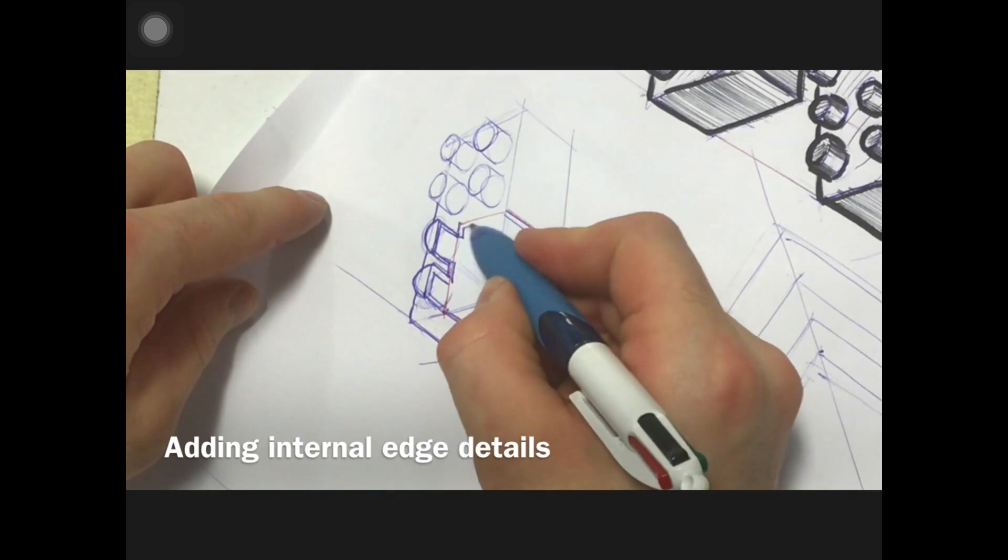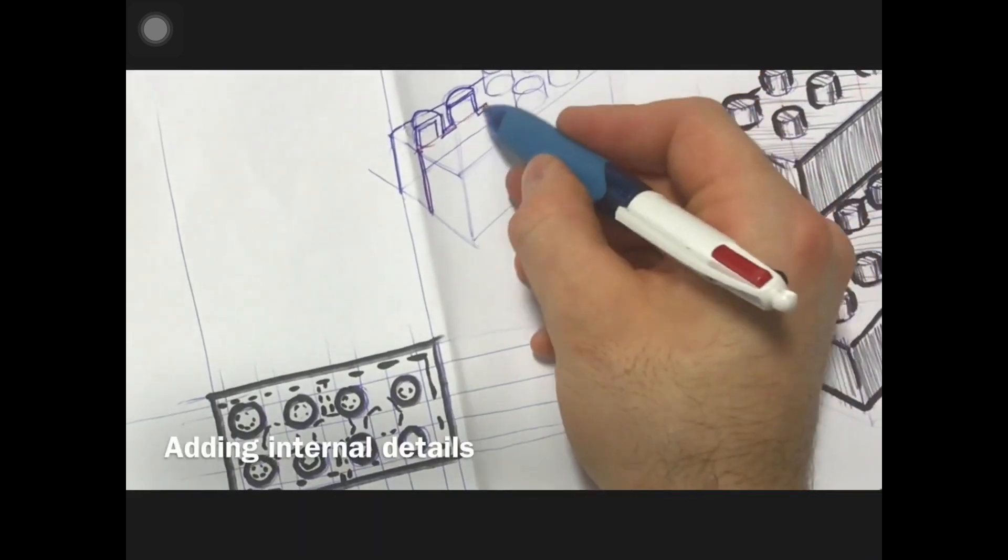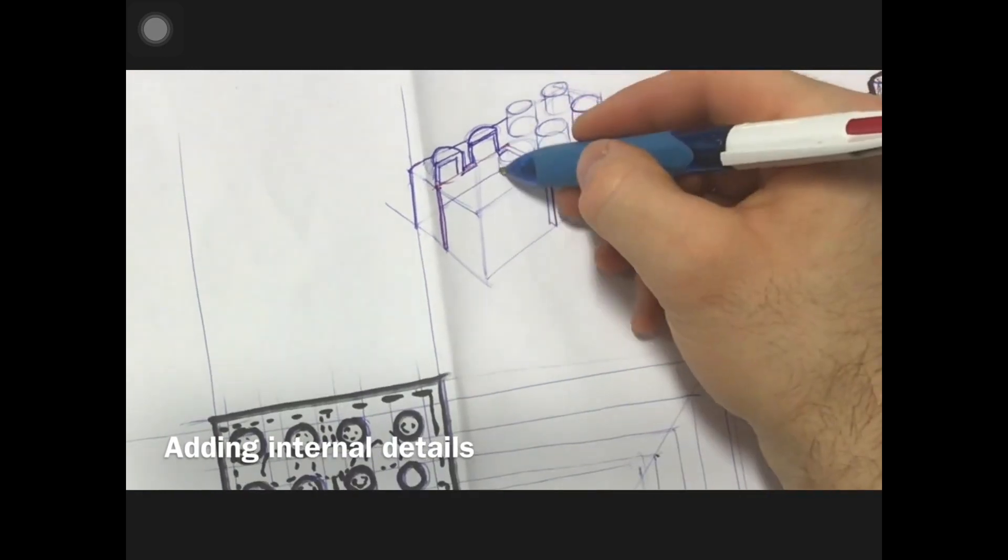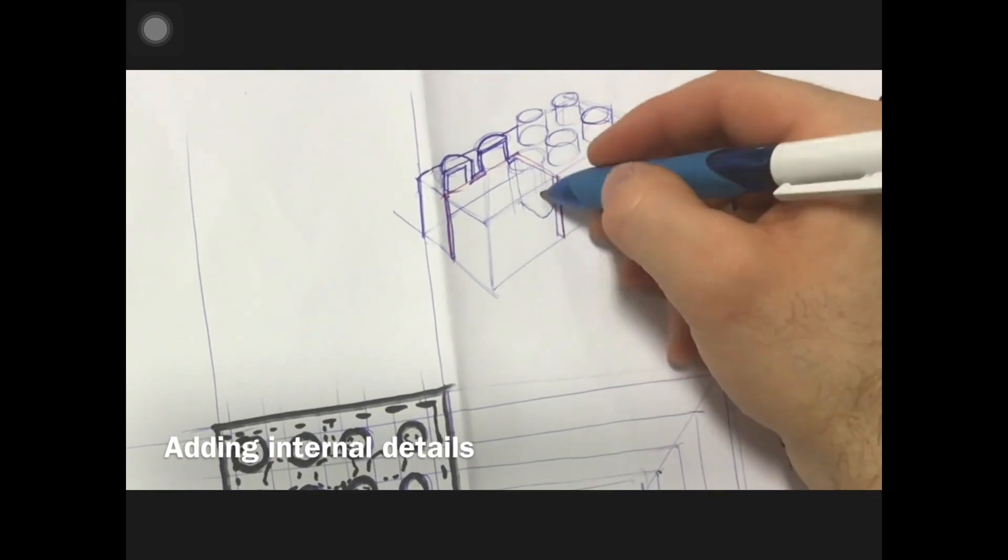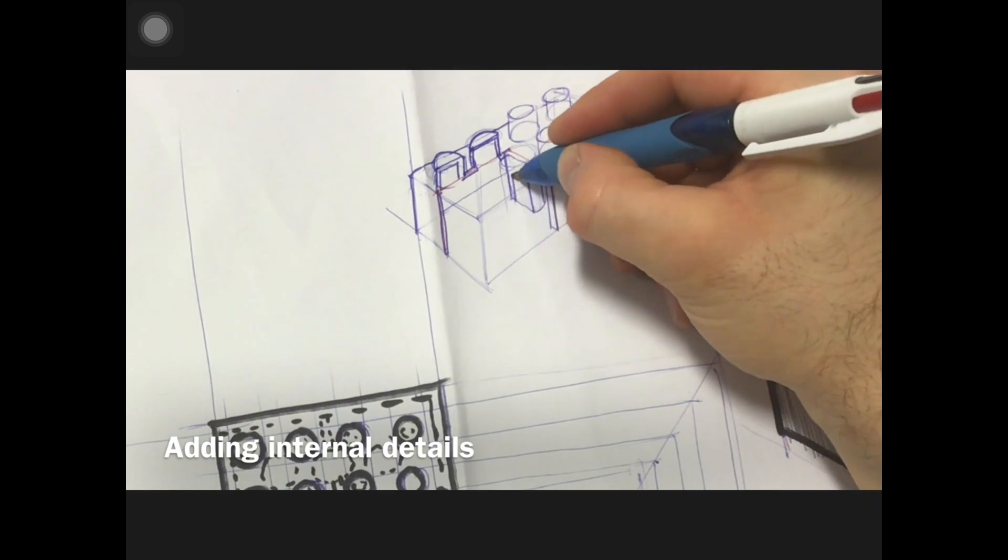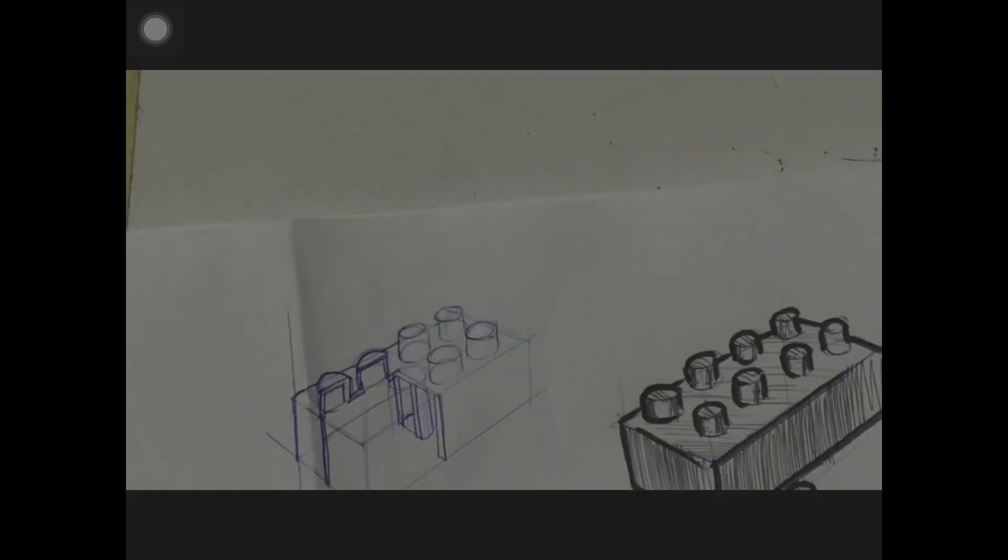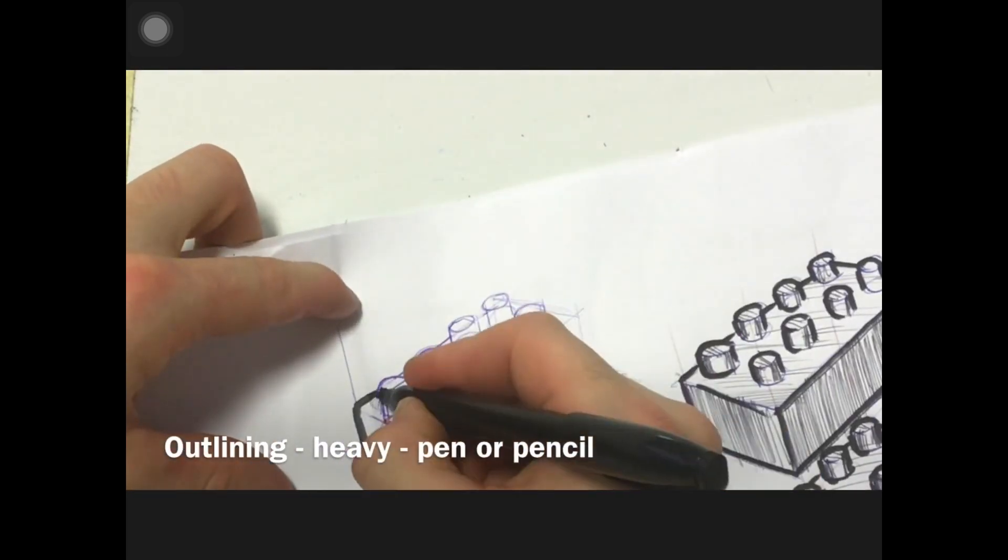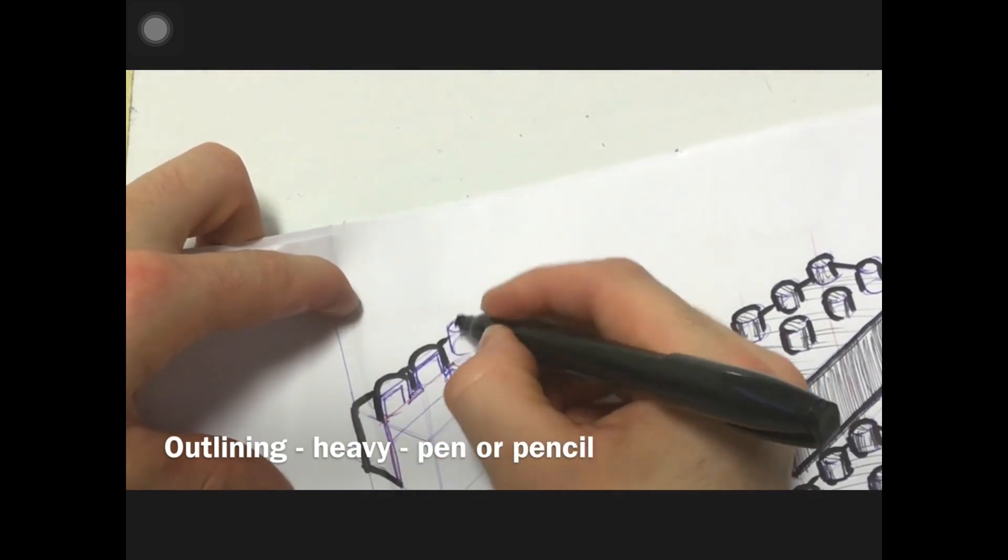Just add in the internal details, internal cylinders that join the different LEGO bricks together. Then taking my black felt pen to go around the outlining object, remembering to do thicker lines for the outer edges and thinner lines for any internal edges.